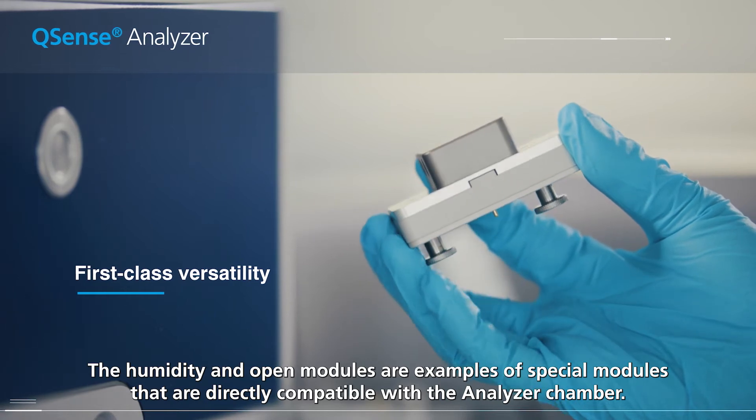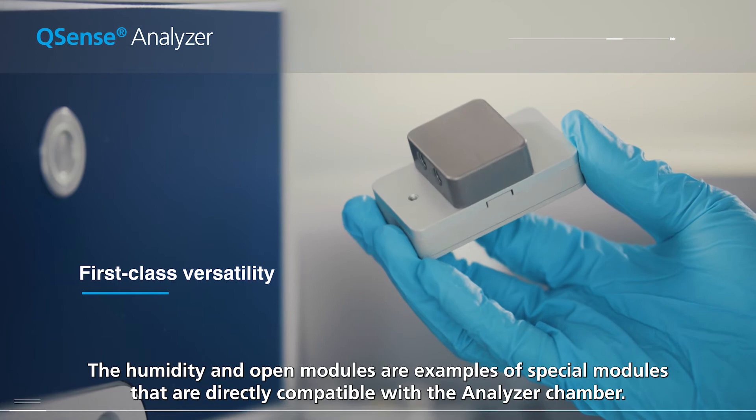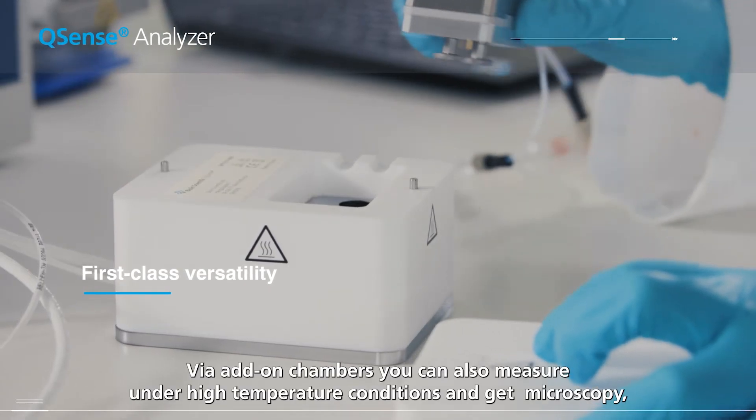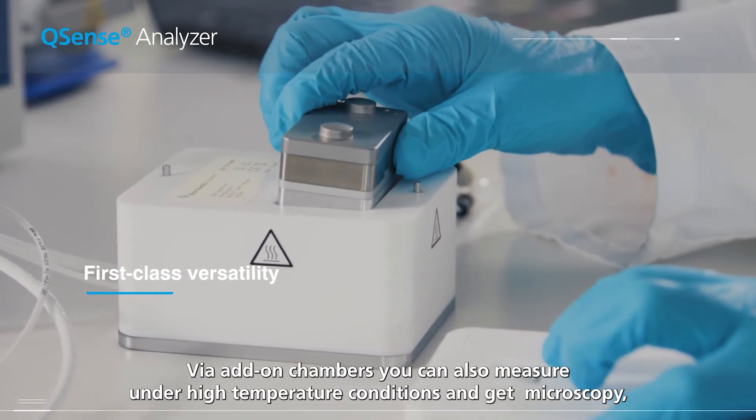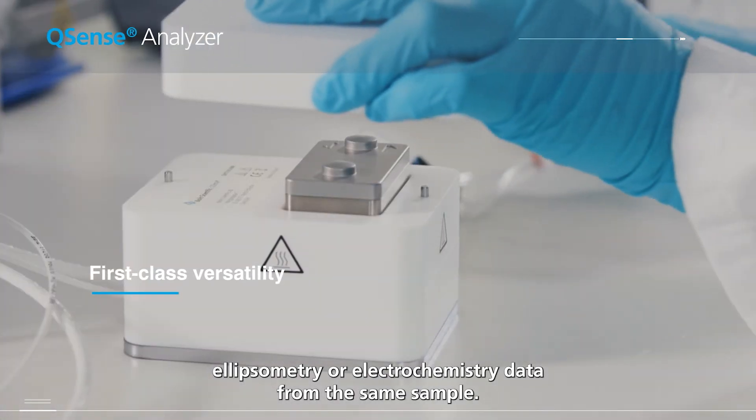The humidity and open modules are examples of special modules that are directly compatible with the analyzer chamber. Via add-on chambers, you can also measure under high temperature conditions and get microscopy, ellipsometry or electrochemistry data from the same sample.